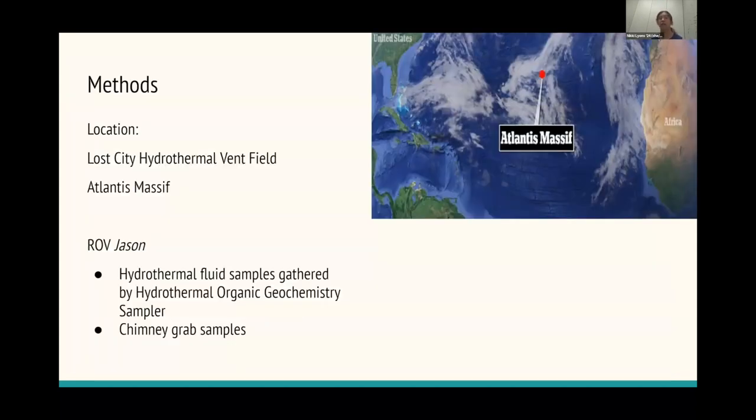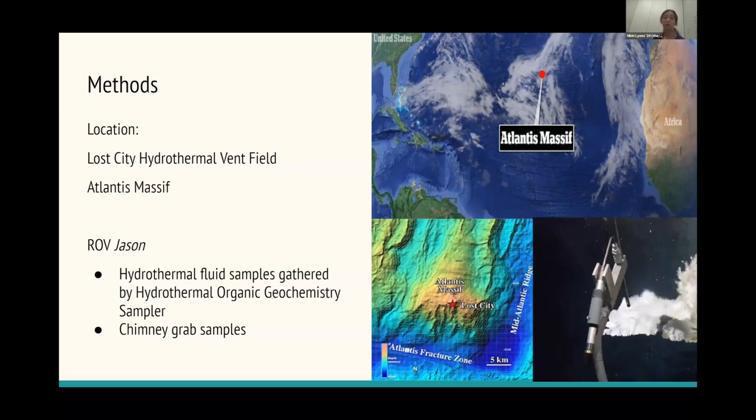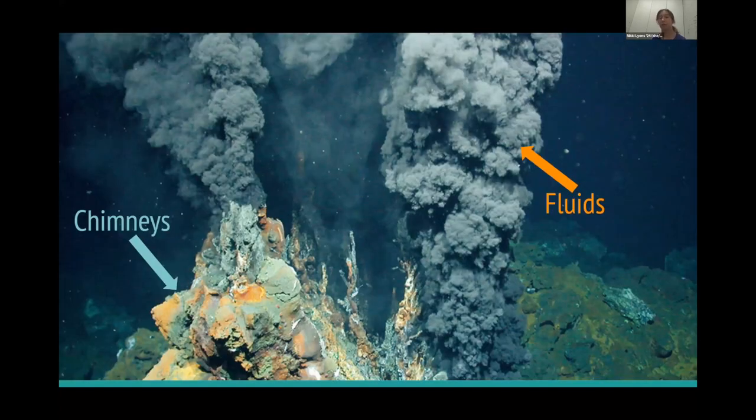And so for my project, I basically did a similar thing to the original project, but I looked at the difference between the fluids given out by the chimneys and the chimneys themselves. So the location was the Lost City hydrothermal vent field, which is located on the Atlantis Massive, kind of smack dab in the middle of the Atlantic. And if you zoom in closer, you can kind of see it's right next to the mid-Atlantic ridge and Atlantis fracture zone that allowed that mountain to kind of uplift. And to get the samples, the ROV called Jason was sent to get the fluids by sort of getting a tube to suck in the fluids and capture that. And it also has an instrument that allows it to grab samples directly from the chimneys. So those are the two important things to know: the hydrothermal fluid samples and the chimney samples. Those are what we are comparing for the project. So this is kind of a visual of that. The fluids are the effluent kind of coming up from the subsurface, and then the chimneys is kind of that crusty layer building up over time.